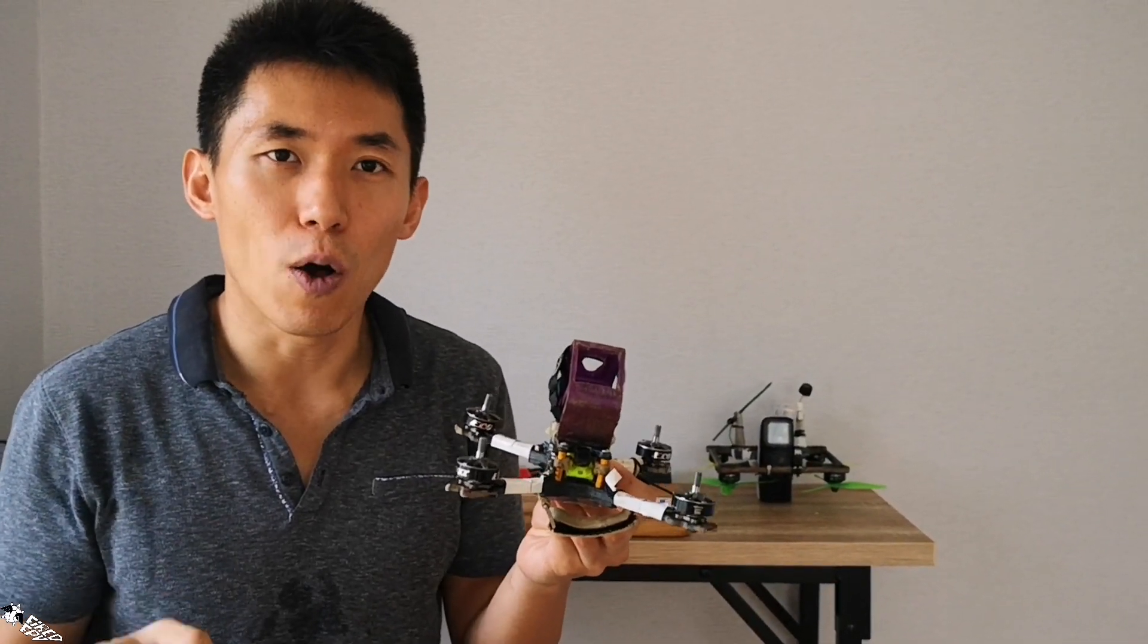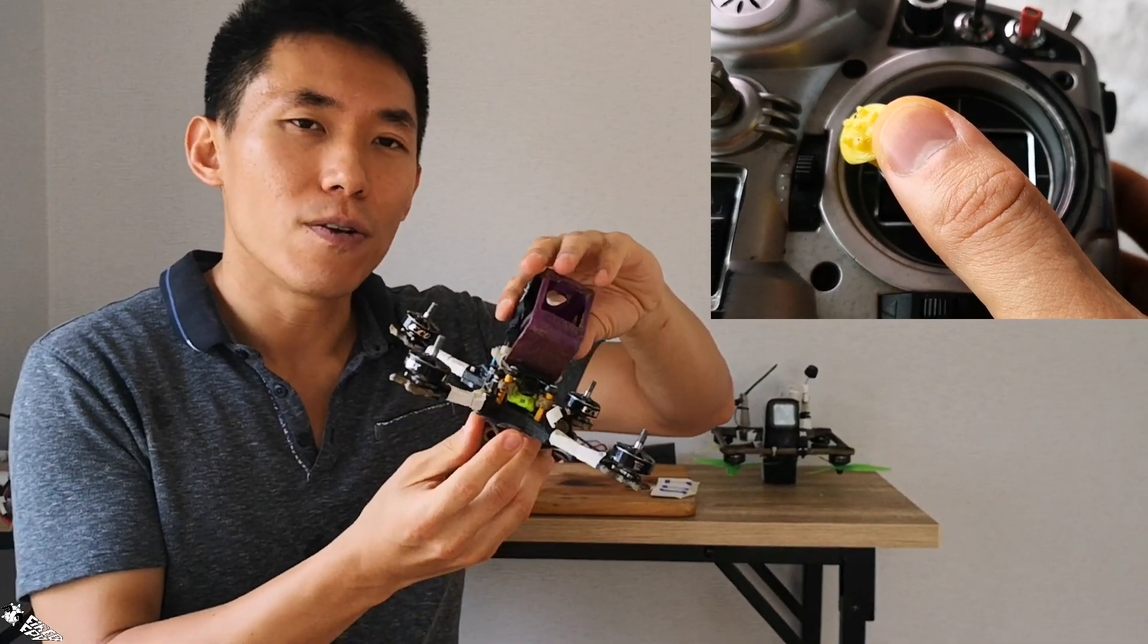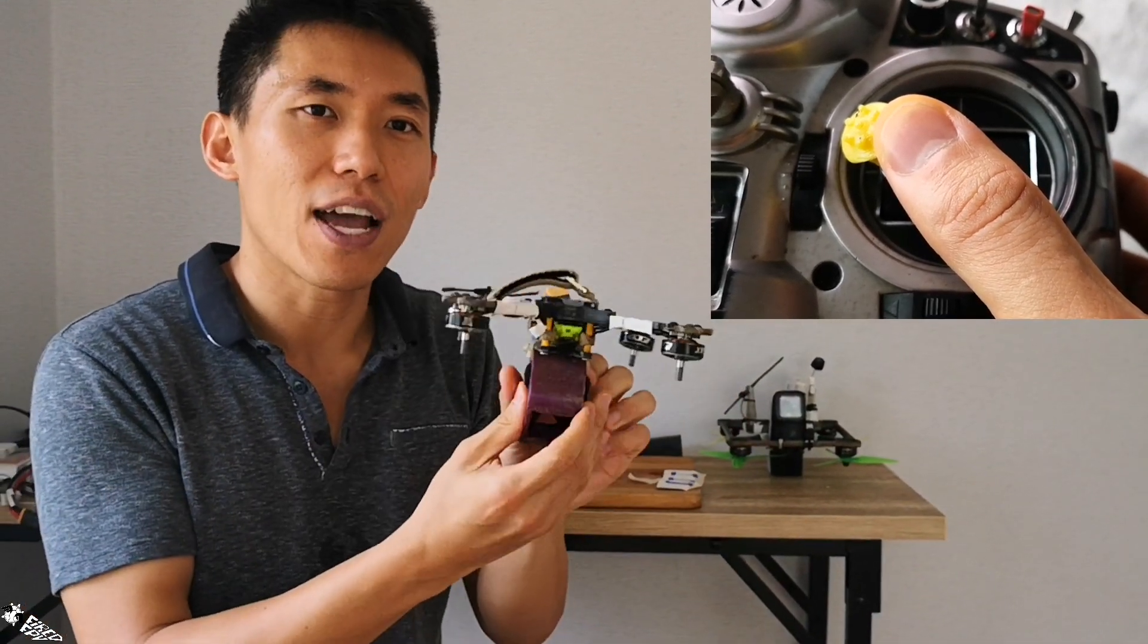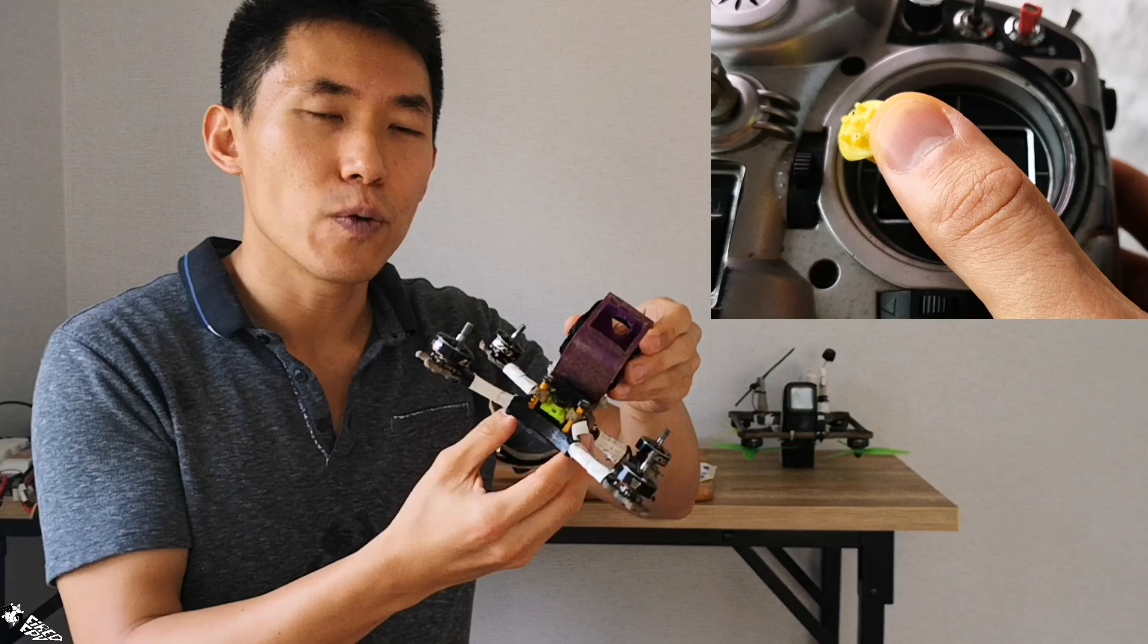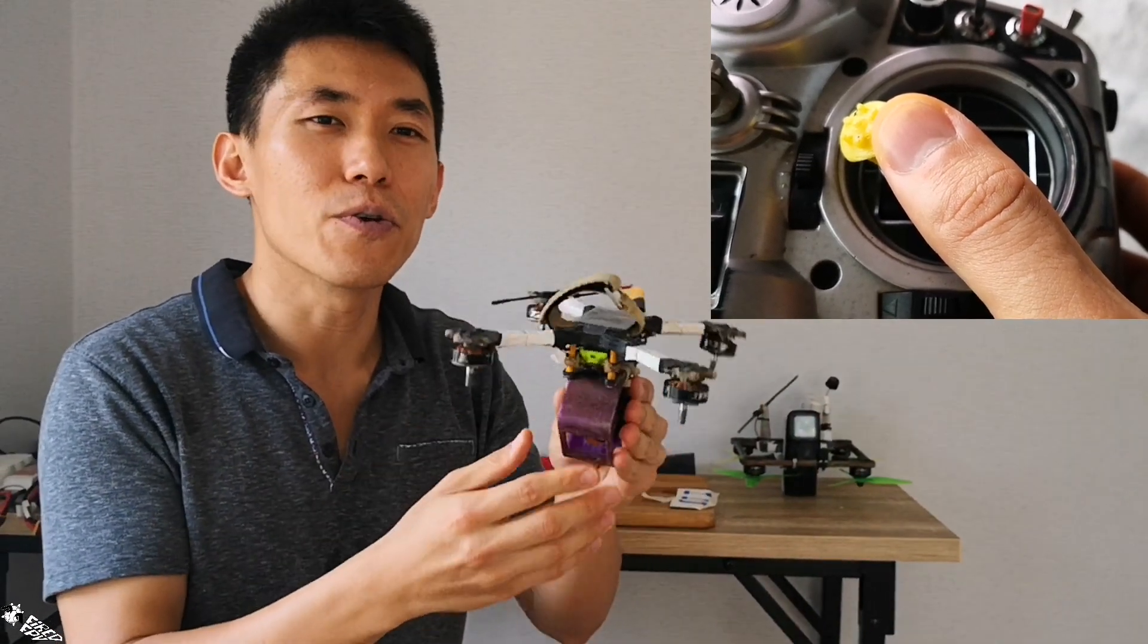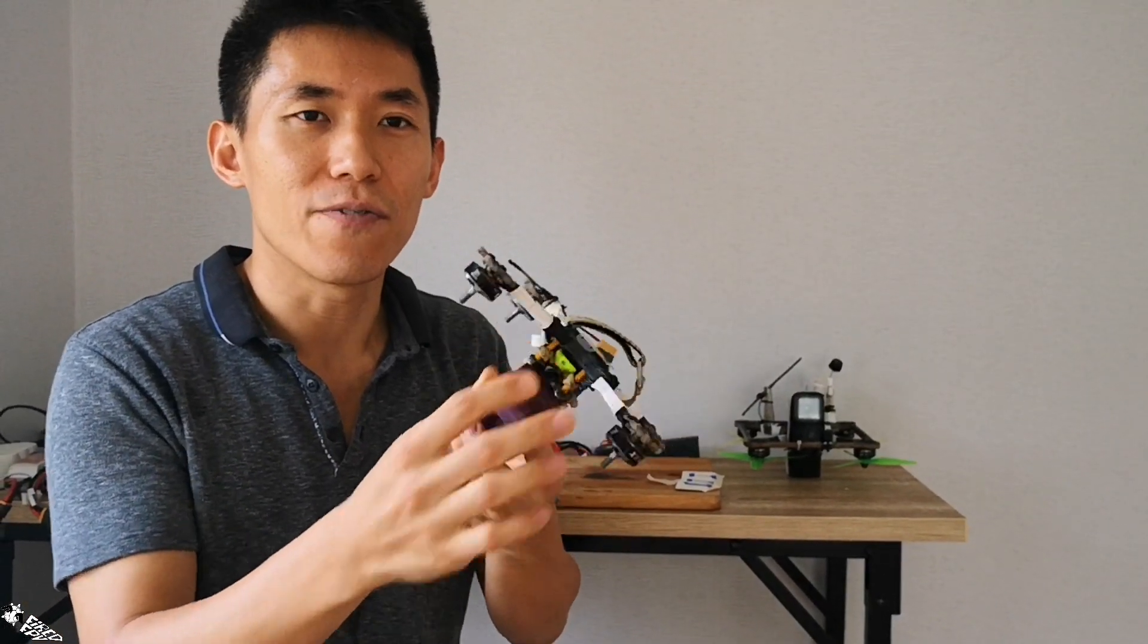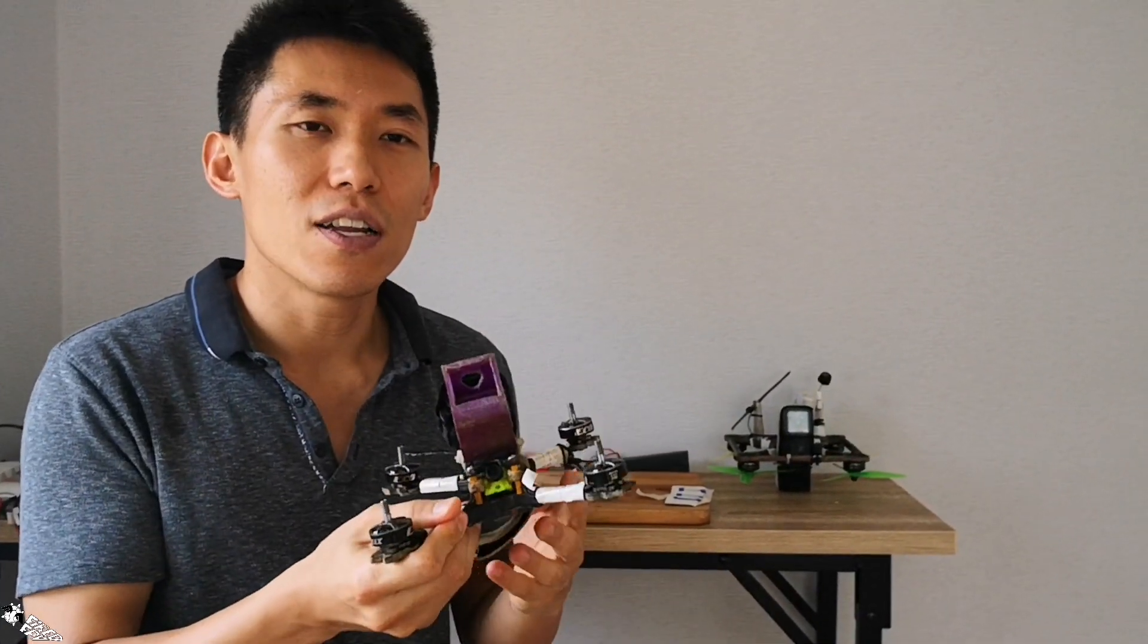And if you are flying Acro Mode and you push your roll stick to the left as far as possible and hold it there, what happens to the drone is that it will roll to the left as fast as possible and continue rolling, rolling, rolling as long as you hold your roll stick to the left. It will not stop rolling. This is the first difference.